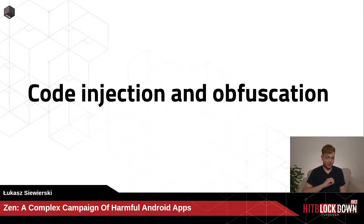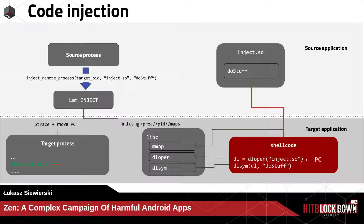Now moving to code injection and obfuscation — a more technically complex part. This is possible because the app was able to root the phone. With root, you have the ability to ptrace into other apps. The code injection diagram shows a source application calling the inject_remote_process method from the LMT inject framework. Parameters are the target process ID, the name of the file containing the code to inject, and the method to inject into the target process.